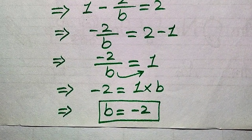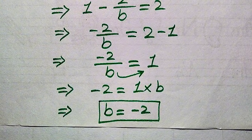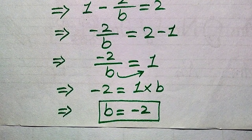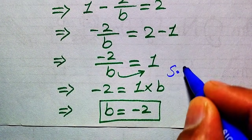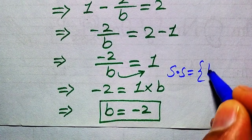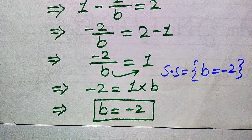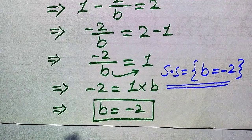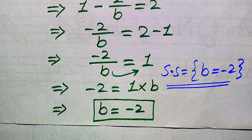This is the final answer. In the first method we already verified that this value of b satisfies the given equation, so the solution set is b equals minus 2 — the only solution of the given equation. Thank you so much for watching this video; please subscribe to my channel for more exciting videos.